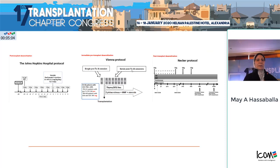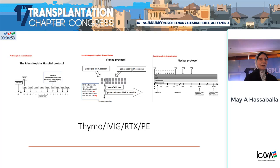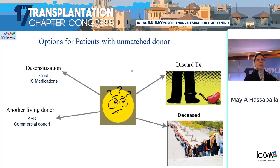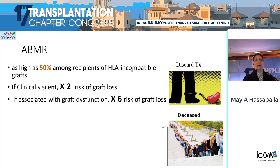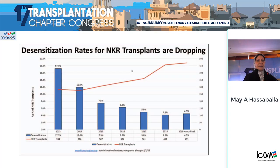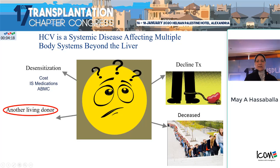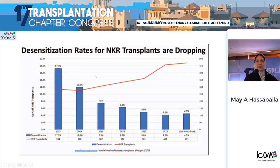Whatever desensitization protocol is used, it involves expensive medications — the standard of care includes thymoglobulin, IVIG, rituximab, and plasma exchange, plus many evolving drugs. This results in great cost and subjects the patient to heavy immunosuppression. Antibody-mediated rejection is a risk occurring in 50% of HLA-incompatible grafts, with a two-times increased risk of graft loss if clinically silent, and a six-times increased risk if associated with graft dysfunction. The desensitization rate for the National Kidney Registry is dropping with increasing numbers of KPD transplants.